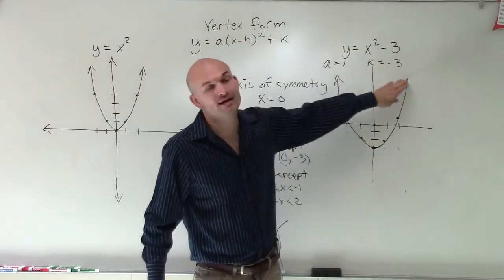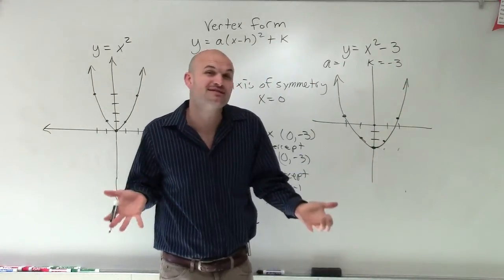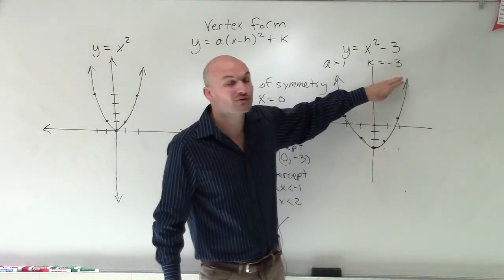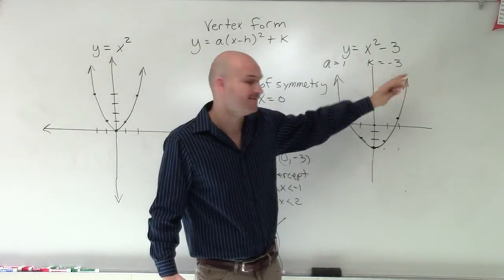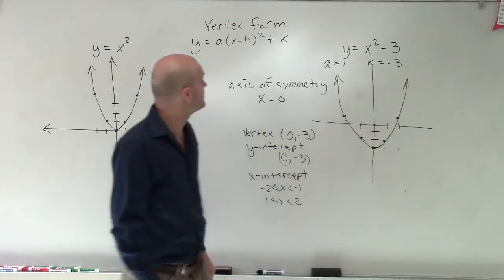So notice, whenever I have a is 1 and my k is negative 3, that's just shifting the graph up or down. And how many units is it shifting the graph? It's only shifting the graph the value of your k. So therefore, you can see that this graph shifted down 3 units.